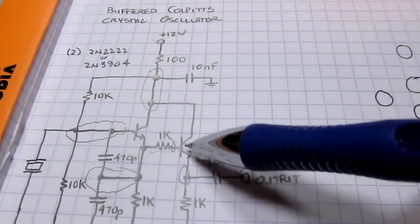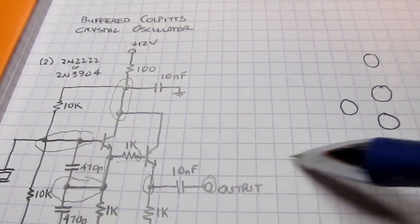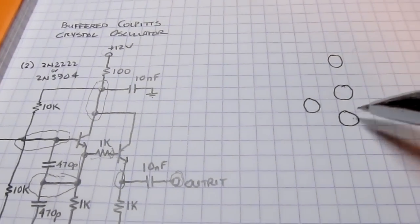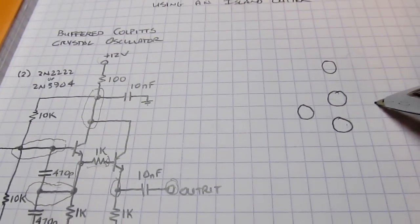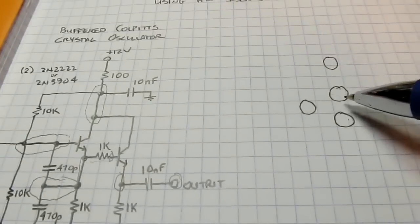Now the other transistor here is going to be sitting over here. The base is going to get connected through a 1K resistor to this node here. So let's put in that connection for the base. The collector is connecting to this same node here.